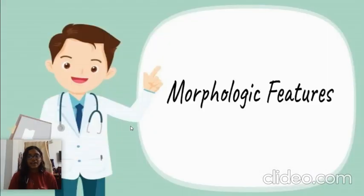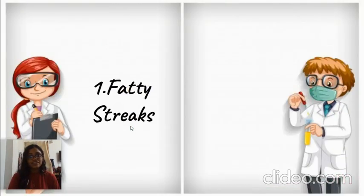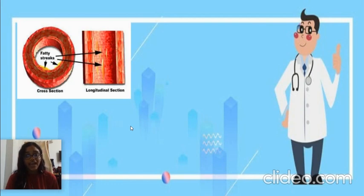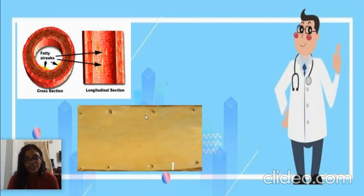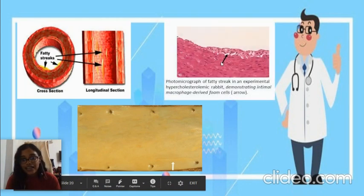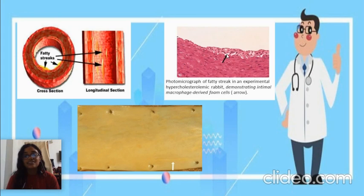We'll now look at how atherosclerosis presents grossly and microscopically by examining the morphological features. First, we'll discuss fatty streaks. Fatty streaks are lesions found in many major arteries such as the aorta and are usually present in the first year of life; however, they disappear with progressive age. Grossly, as you can see here, they appear as slightly elevated, bead-like streaks. Microscopically, denoted by this black arrow, they consist of foam cells and smooth muscle cells.